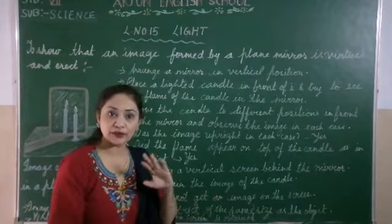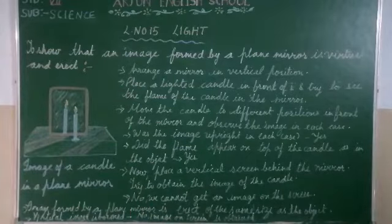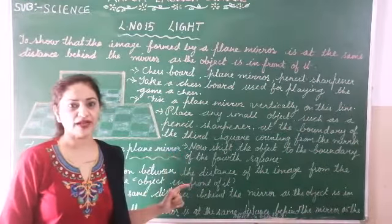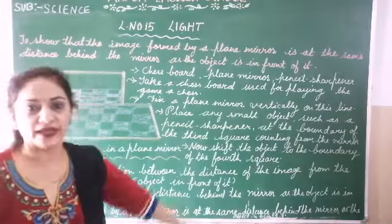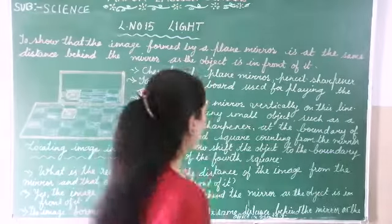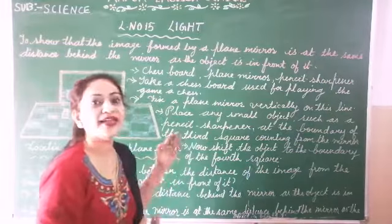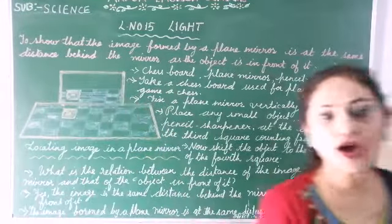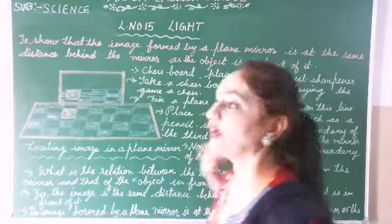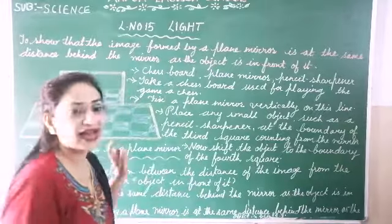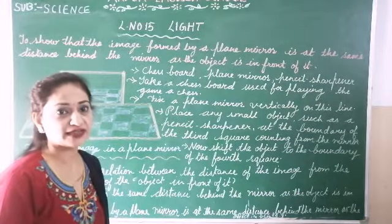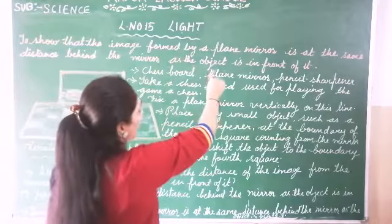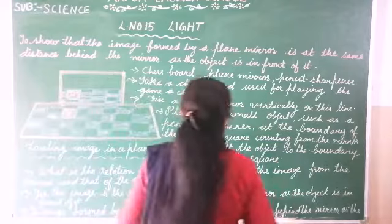No image can be obtained on the screen — the image is virtual. This activity can help us understand: suppose this is a mirror. As we stand in front of it, the image will appear in the mirror. The image is in the mirror. The distance of the image from the mirror is the same as the distance of the object in front of it.